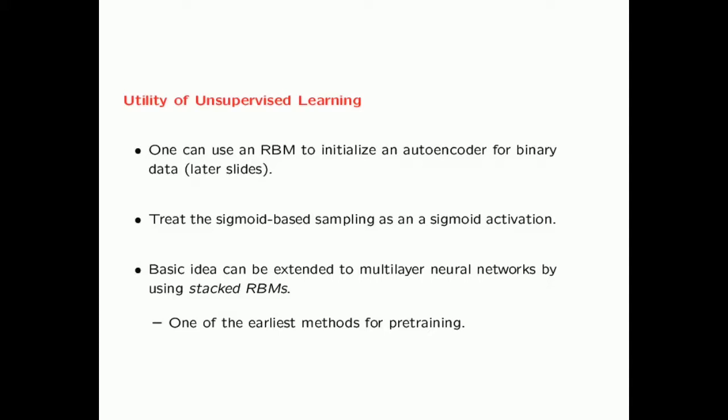There is significant utility in this type of unsupervised learning. One utility is that one can use an RBM to initialize an autoencoder for binary data. In the restricted Boltzmann machine, you are doing sigmoid-based sampling; you treat it as a real-valued sigmoid activation as in a conventional neural network. This basic idea can be extended to multi-layered neural networks by using stacked RBMs, which was the earliest method of pre-training—this is how pre-training really got started.